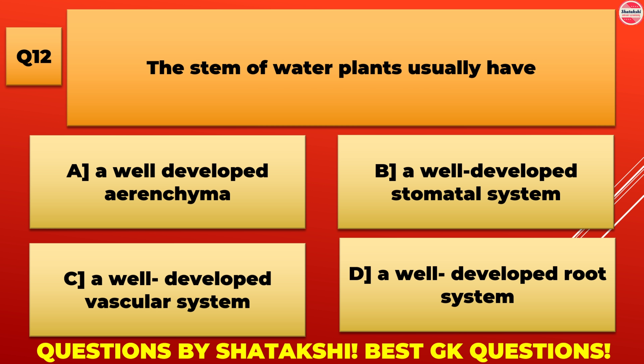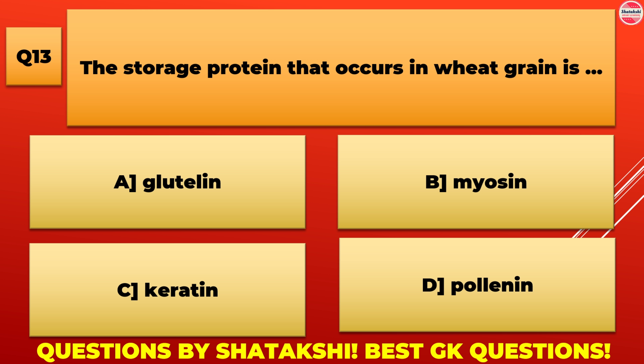The sperm of water plants usually have: A. A well-developed aerenchyma, B. A well-developed stomatal system, C. A well-developed vascular system, D. A well-developed root system. A. A well-developed aerenchyma is the correct answer.